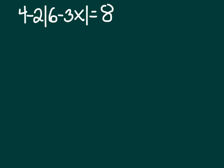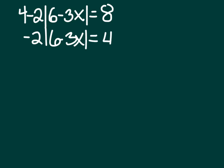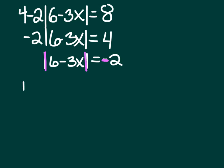Here's another example: 4 minus 2 times the absolute value of 6 minus 3x equals 8. First, isolate the absolute value — subtract 4 from both sides, then divide both sides by negative 2. At this point you should see that the absolute value of anything can never equal a negative number — never. So there are no x-values that work. The answer is no solution. If you reach a step where the absolute value equals a negative, you can stop immediately.